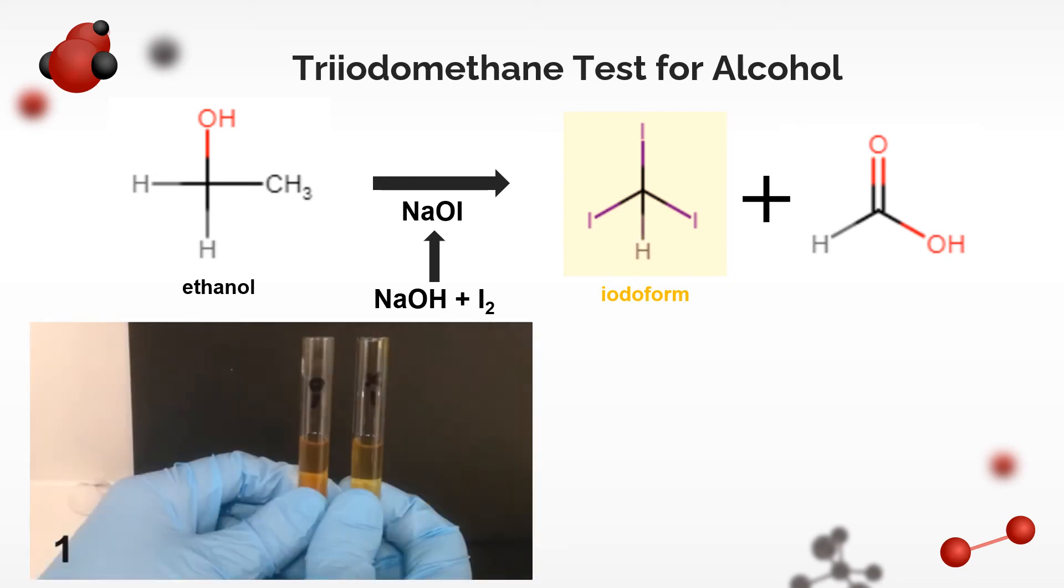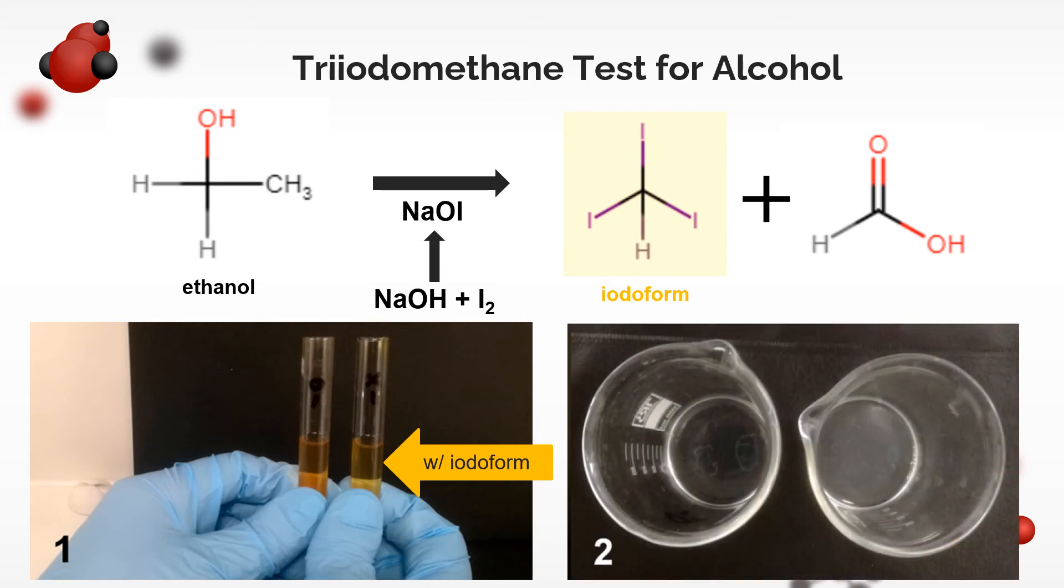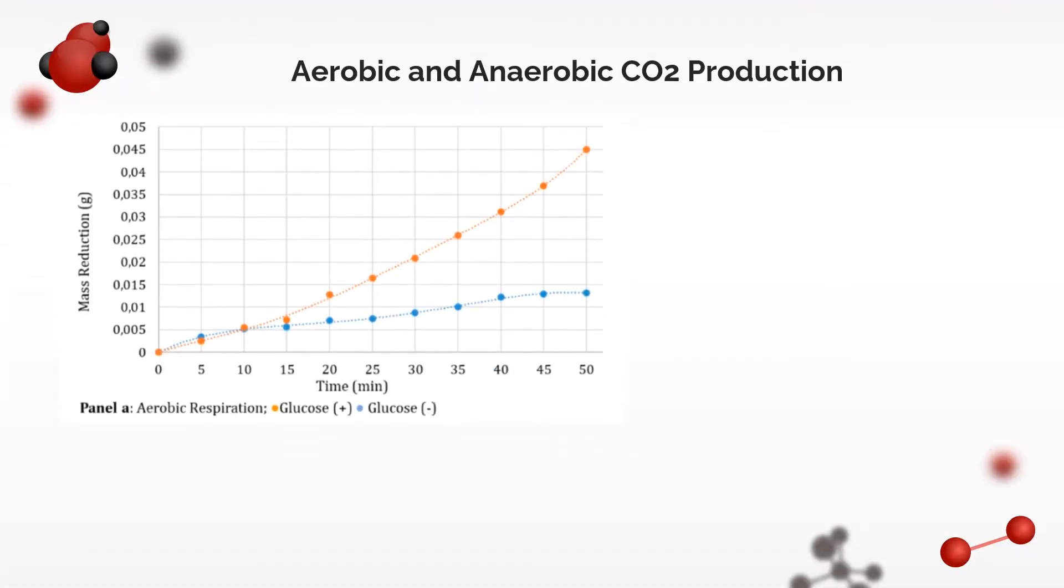But anyway, the orange or yellowish color is a positive result, shown by the test tube on the right in image 1. Actually, just by observing the solutions without the test, we can determine that the beaker on the right in image 2 has ethanol because of its murky appearance. So now we can move on to the quantitative results.